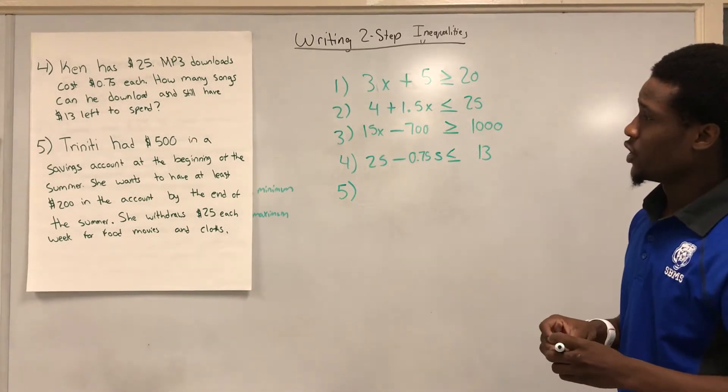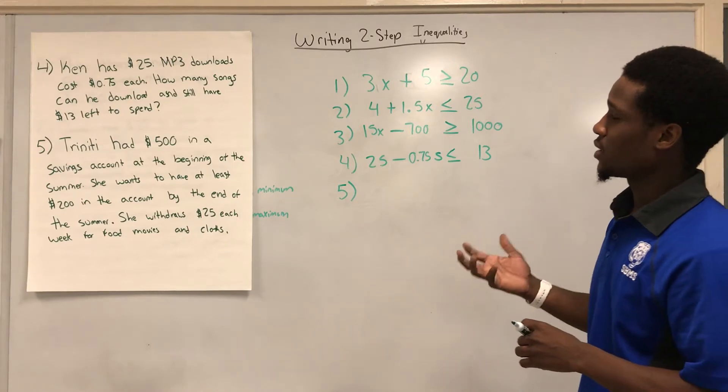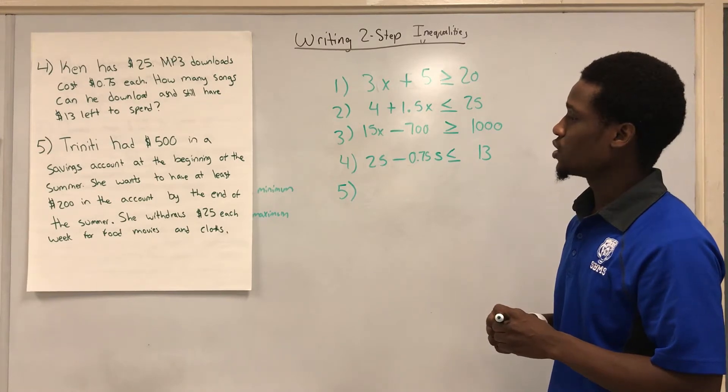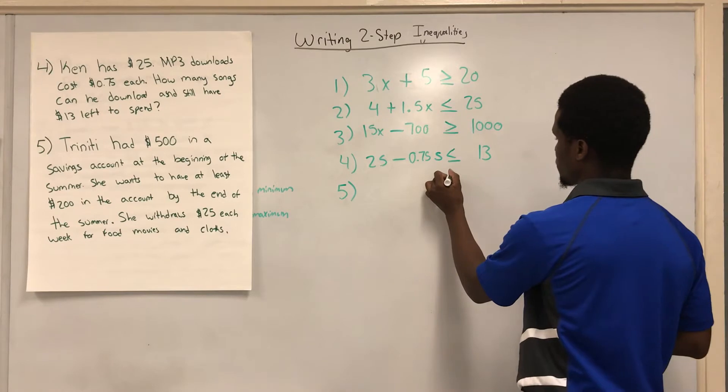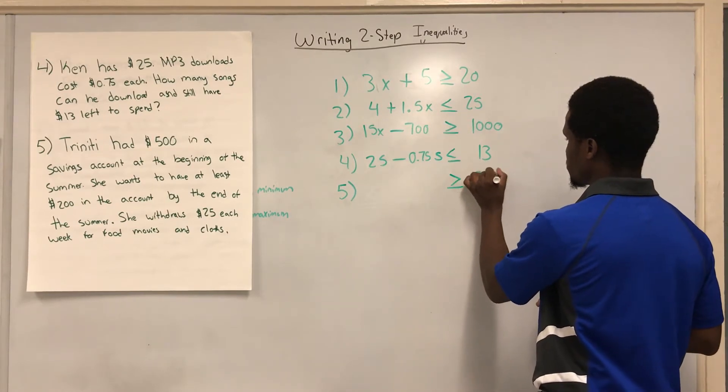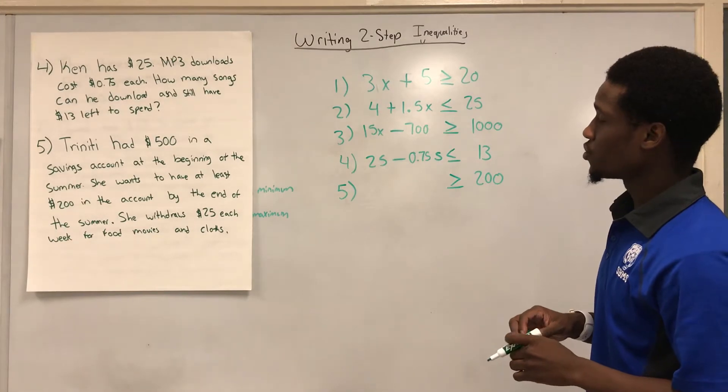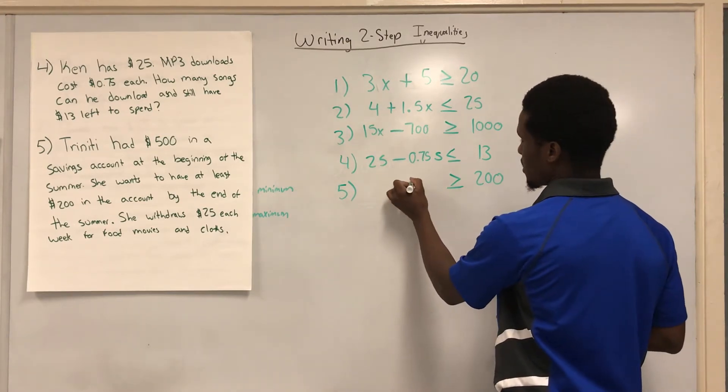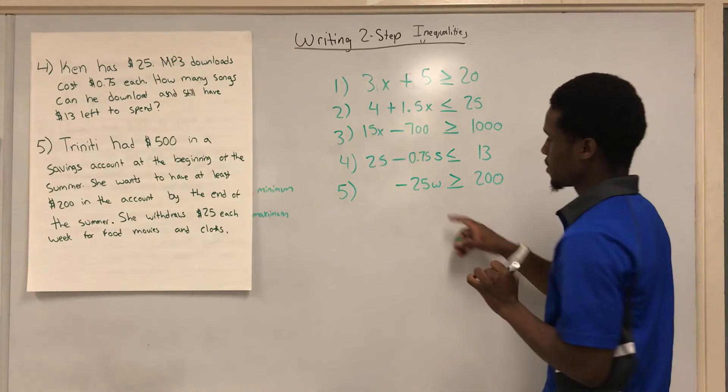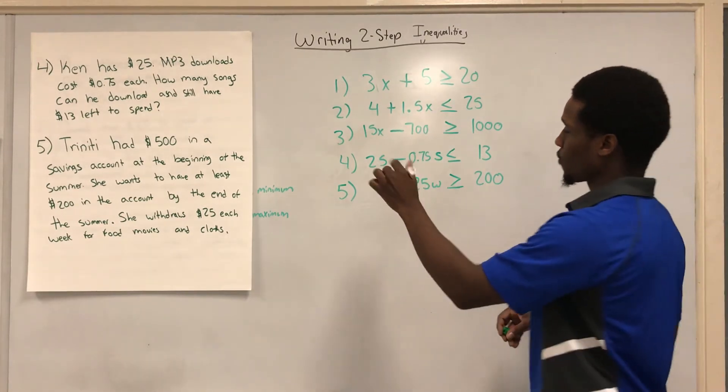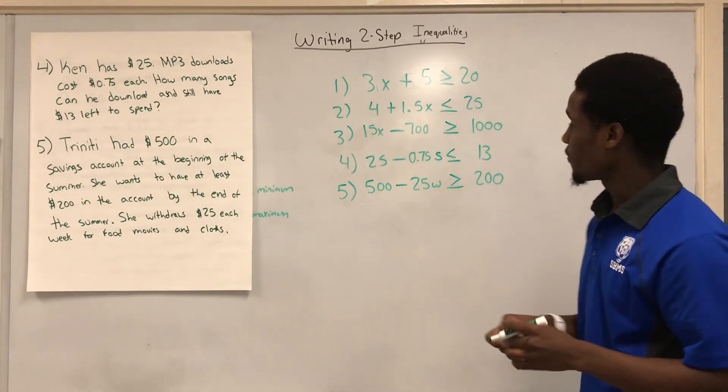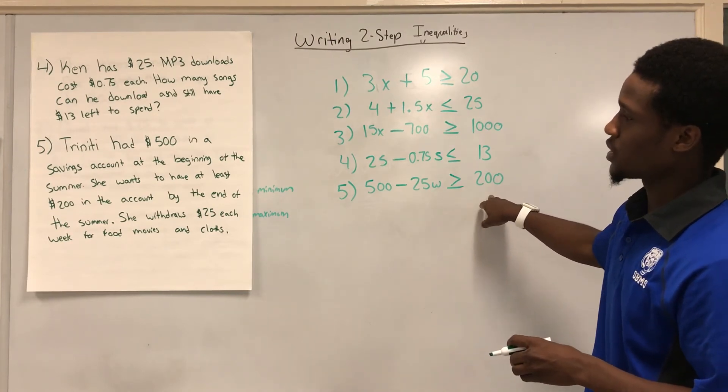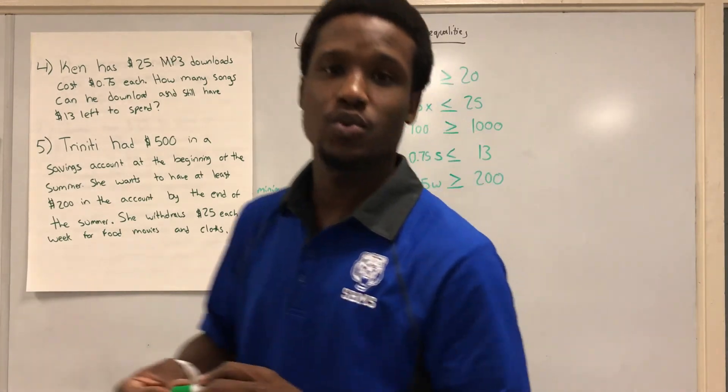Let's take a look at our last example. Trinity had $500 in a savings account at the beginning of the summer, so that sounds like a constant. She wants to have at least $200 in the account by the end of the summer. So at least has to be greater than or equal to $200. She withdraws $25 each week for food, movies, and clothes, so she's taking away $25 each week, so $25W. And of course she starts with $500. So my final inequality is going to be $500 minus $25W has to be greater than or equal to $200. Because she wants to have at least $200 in her account. And that's it. We'll practice more in class.